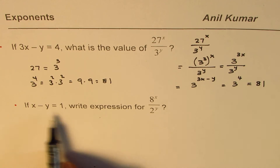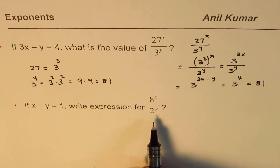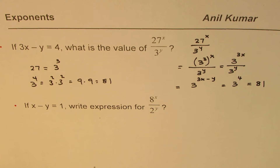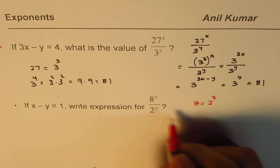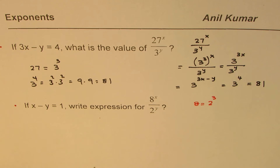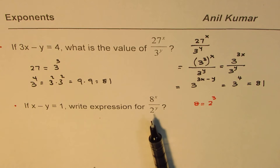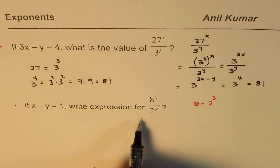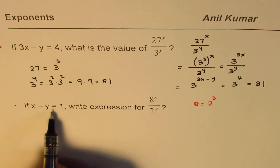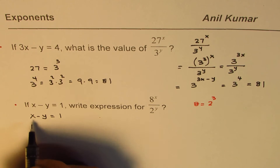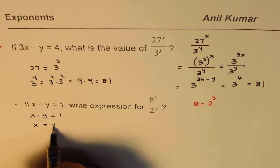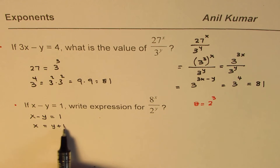Now let us see how to solve the next one, which is similar. You can actually pause the video, answer this question, and then continue watching. The concept is similar — you can write 8 as 2 to the power of 3. So it's the same idea of finding a common base. However, in this particular question I'll follow a different method. We know x minus y equals 1, so I can rearrange this as x equals y plus 1. I can then replace x with y plus 1 to get the same exponents.